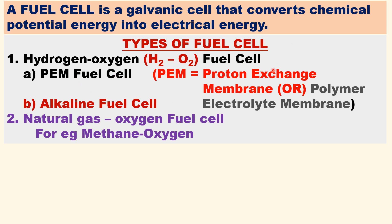Types of fuel cells. There are two major types. They are: hydrogen-oxygen fuel cell, and natural gas or biogas-oxygen fuel cell. Within the hydrogen-oxygen fuel cell, there are two subtypes. One is the PEM fuel cell — PEM refers to Proton Exchange Membrane or Polymer Electrolyte Membrane. The second is the alkaline fuel cell, which was used by NASA to power satellites.